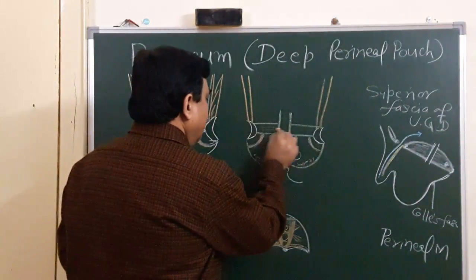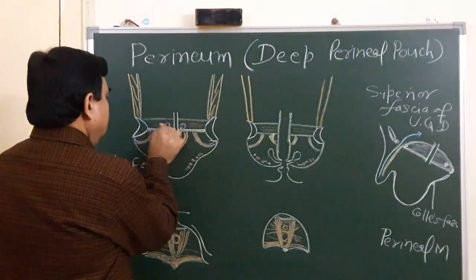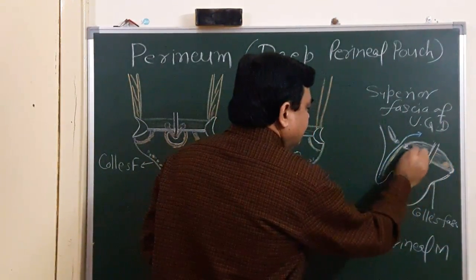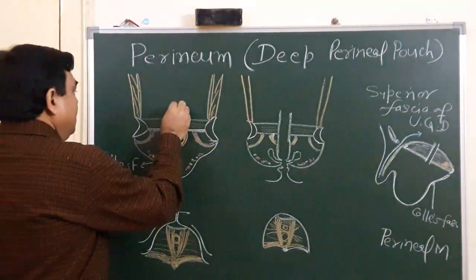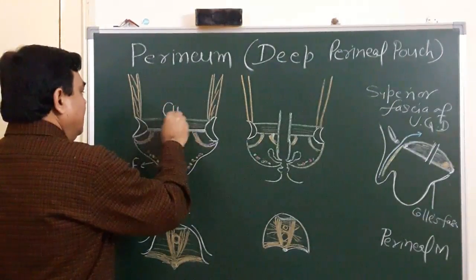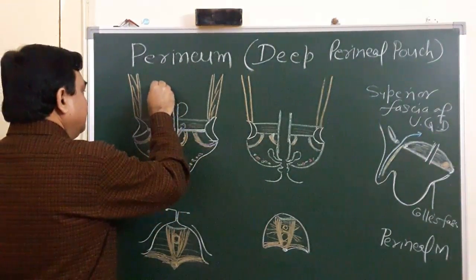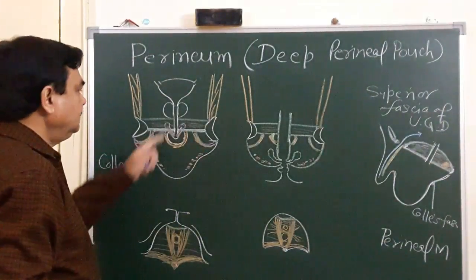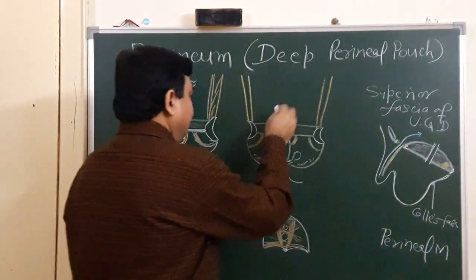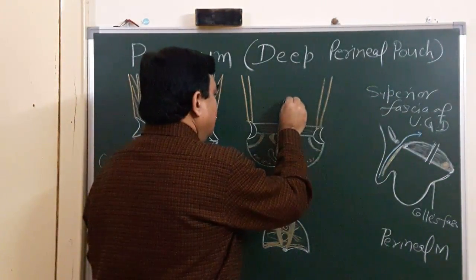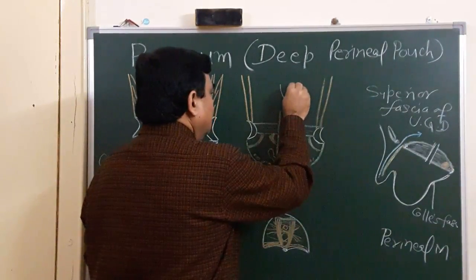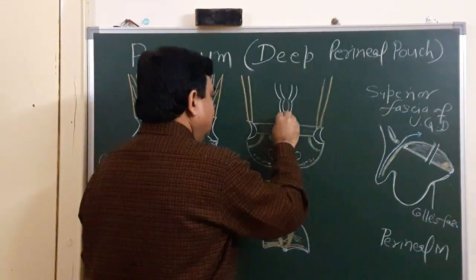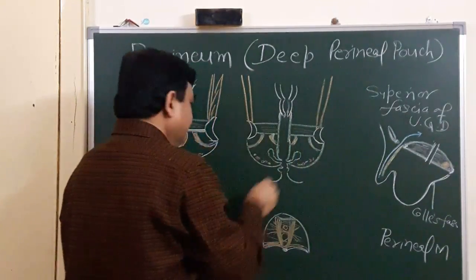Here you can complete this diagram showing the position of the deep transverse perineal muscle. In the male, here is the prostate, here is the urethra, and this is the urinary bladder. In the female, this is the uterus, here is the cervix, this is the vagina.